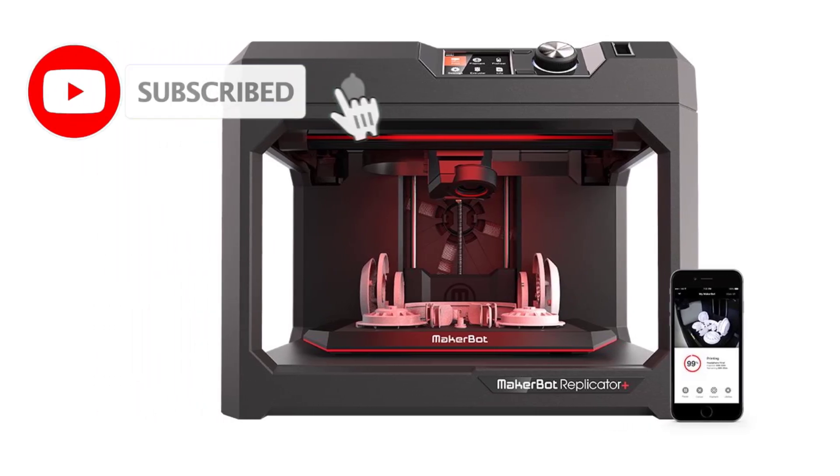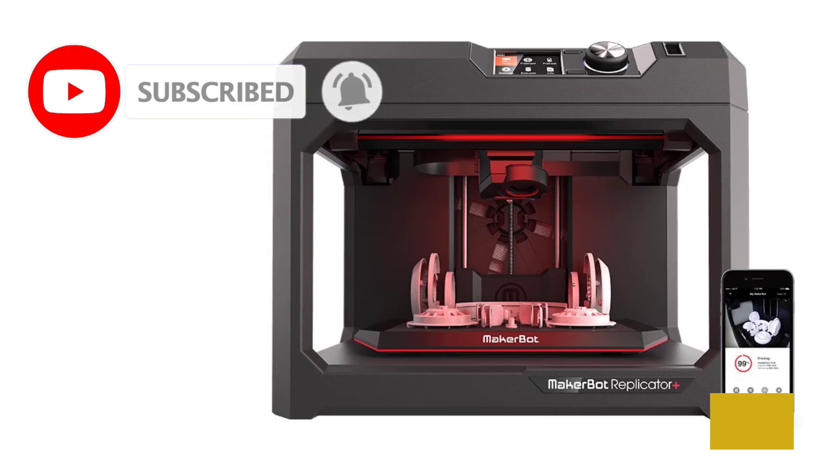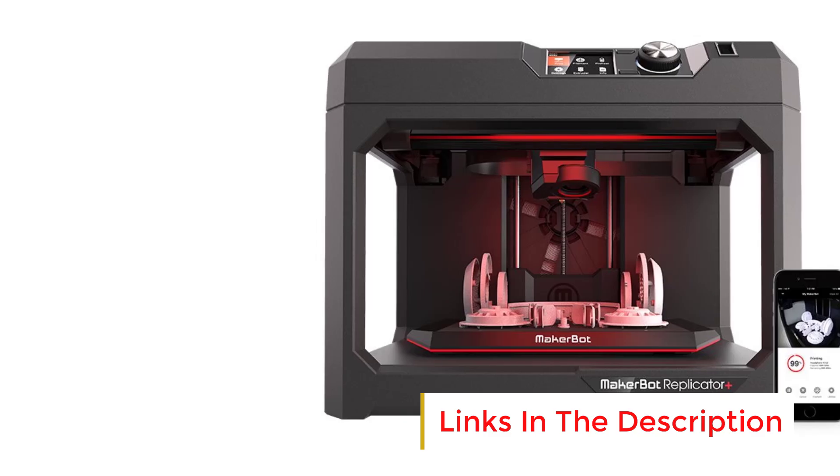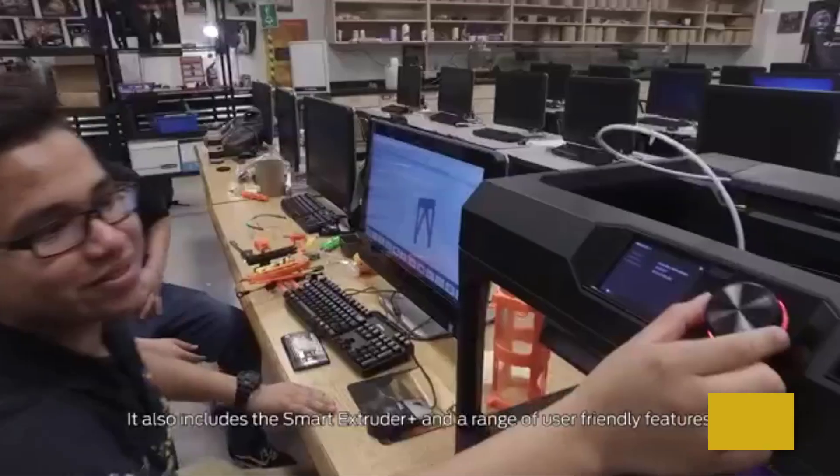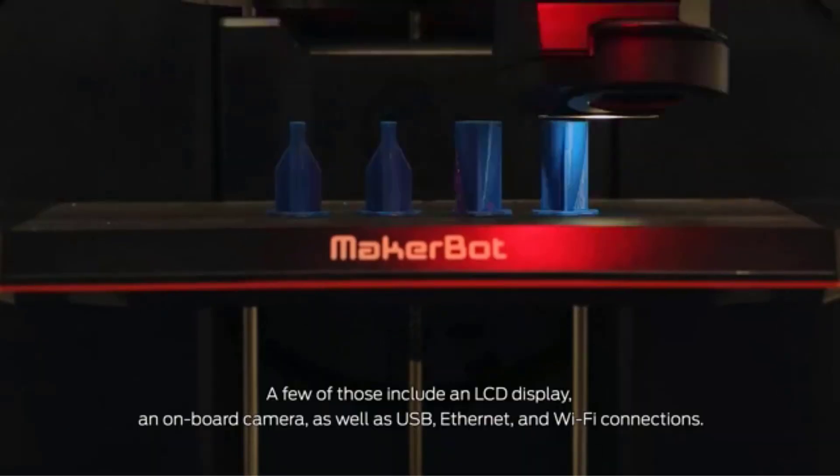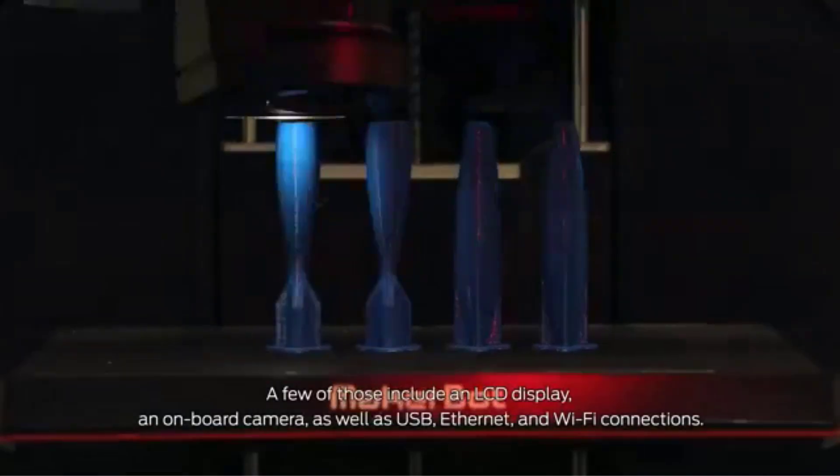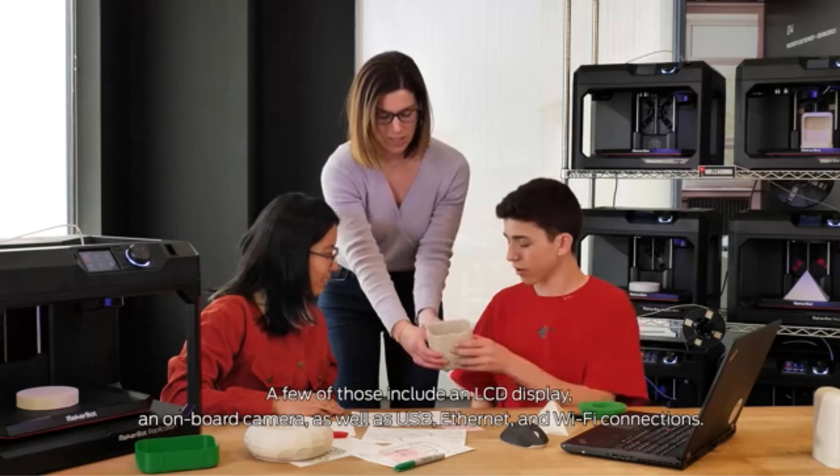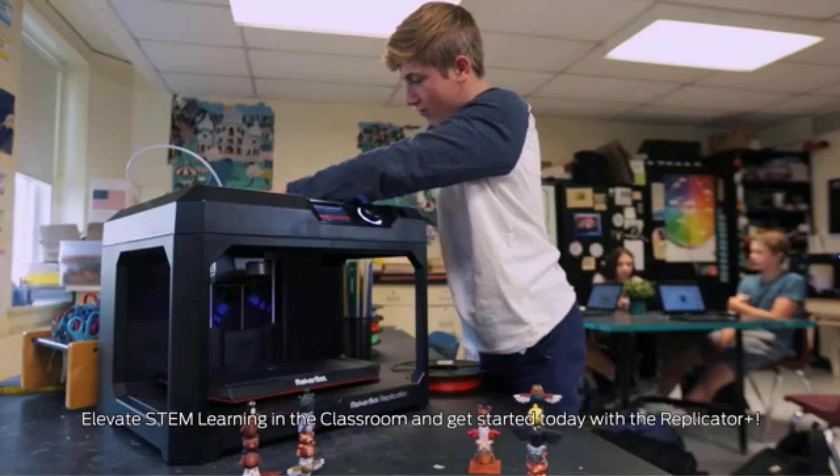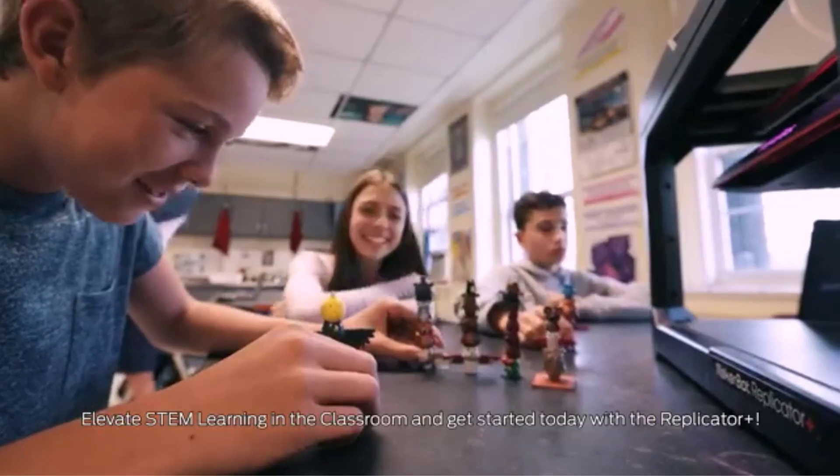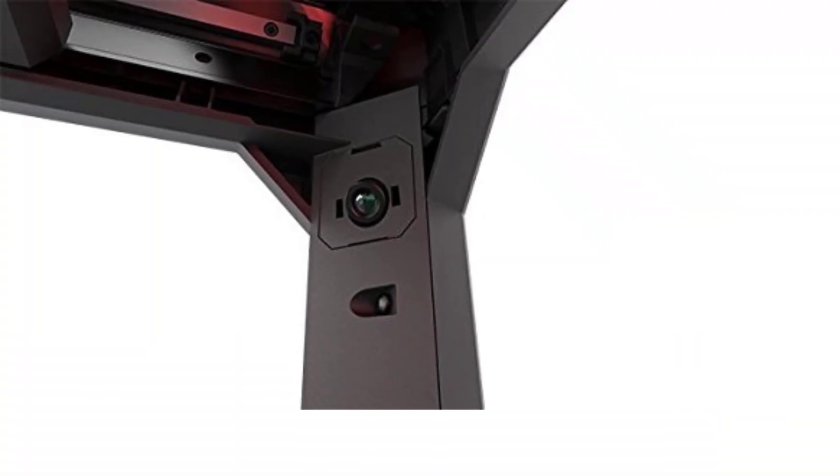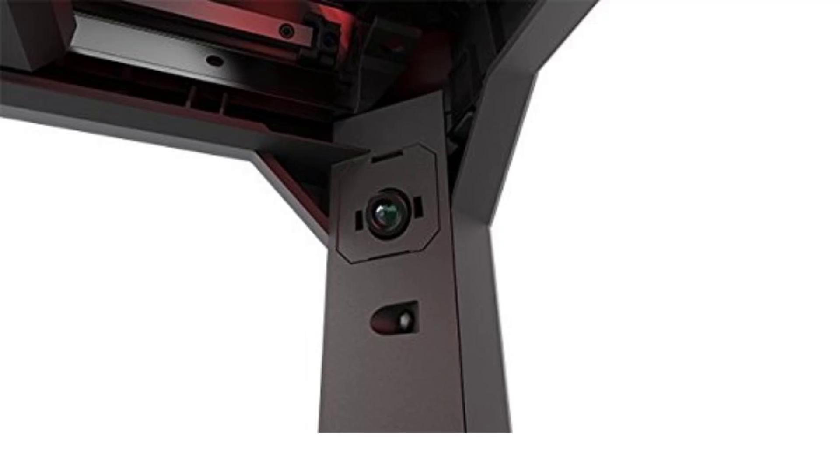One of the key features of the Replicator Plus is its factory-leveled flex-build plate, which eliminates the need for manual bed leveling and offers excellent print adhesion. The flexible nature of the plate makes it easy to remove prints without damaging the model or the plate itself, simplifying the post-printing process. The printer has a print size of 11.6 x 7.6 x 6.5 inches, providing ample space for a variety of projects, from smaller models to medium-sized prototypes.